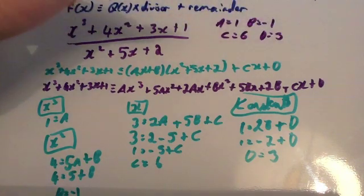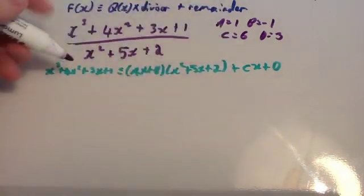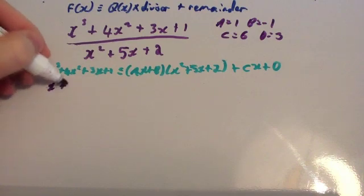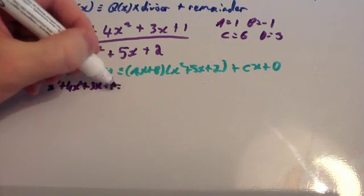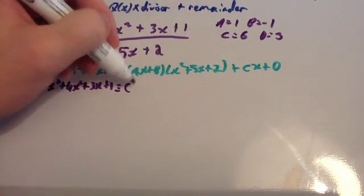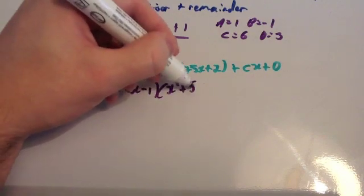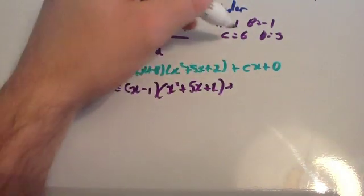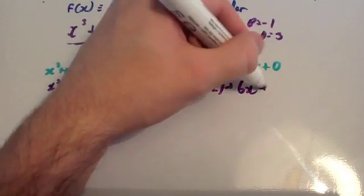Now we're going to put these values back in to work out what our quotient and remainder are, and look at what format to write our answer in. So x cubed plus 4x squared plus 3x plus 1 is equivalent to x minus 1, times x squared plus 5x plus 2, plus 6x plus 3.